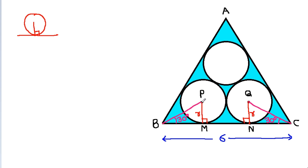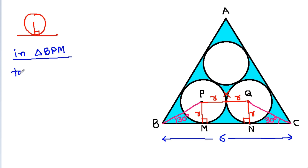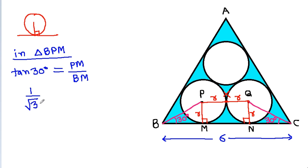And PM is radius, QN is radius. If we join PQ, suppose this point is X, then PX is radius and QX is radius. In triangle BPM, tan 30° equals PM divided by BM, and tan 30° equals 1 over √3.